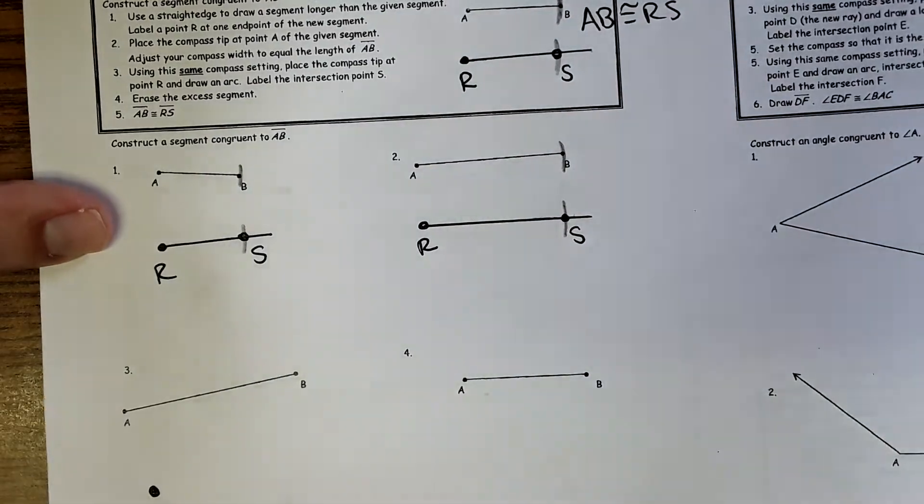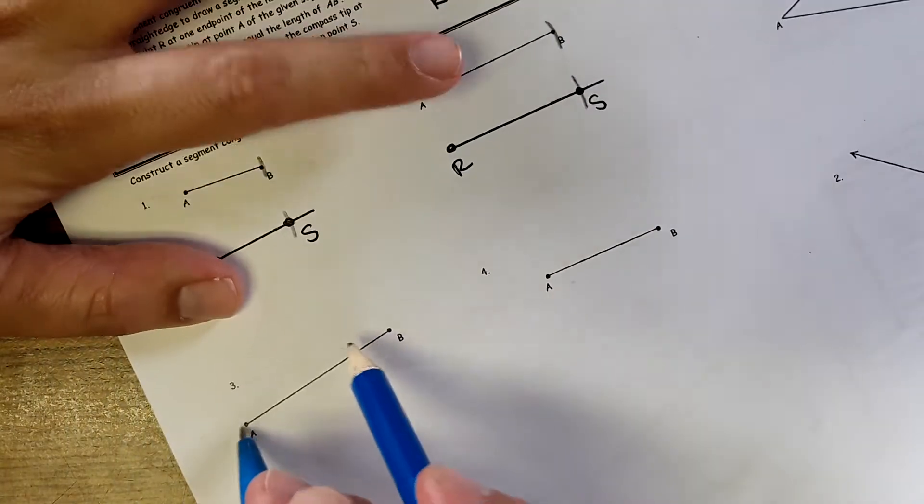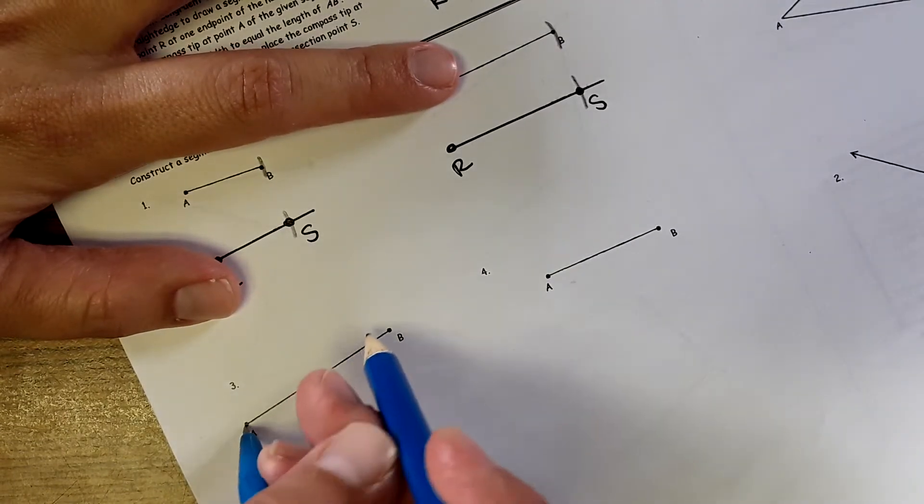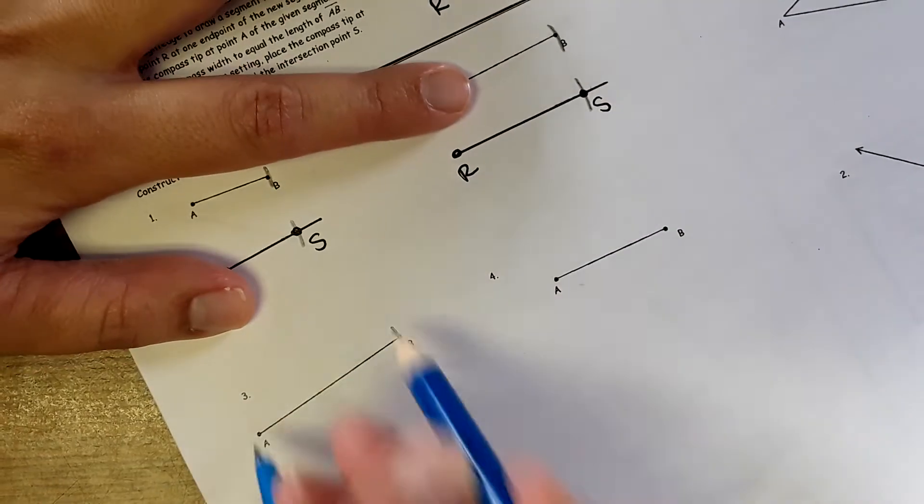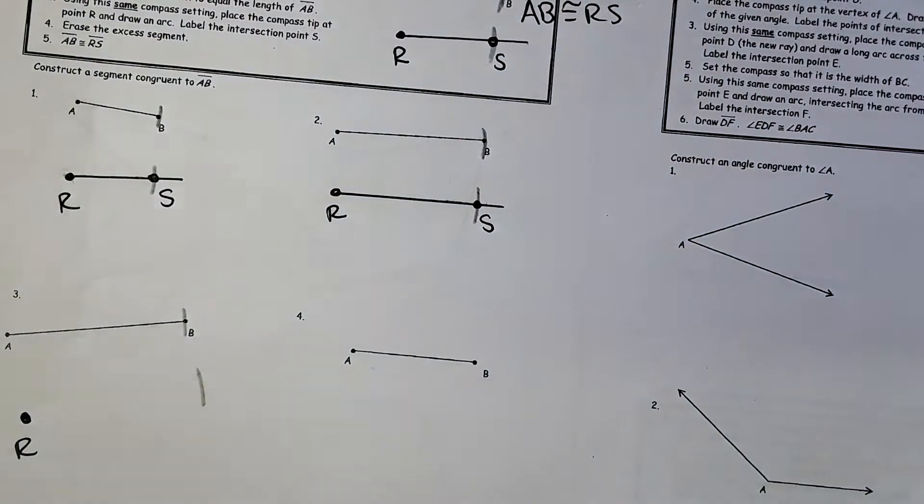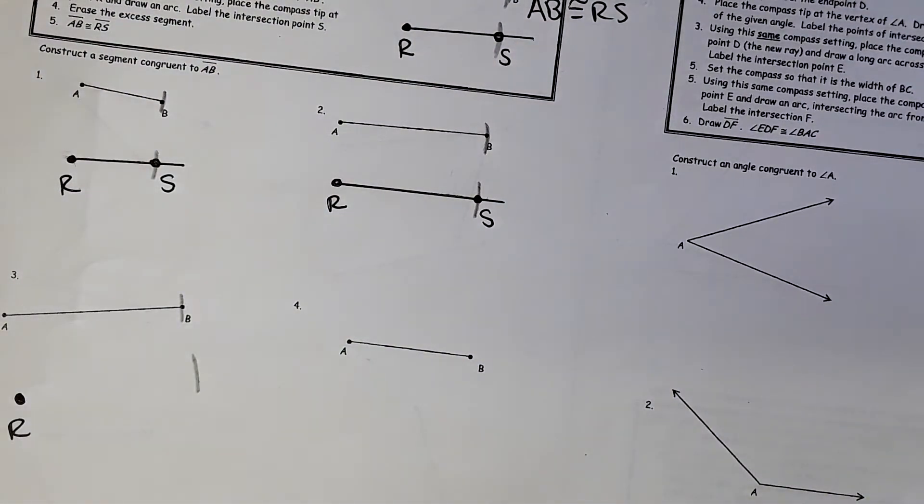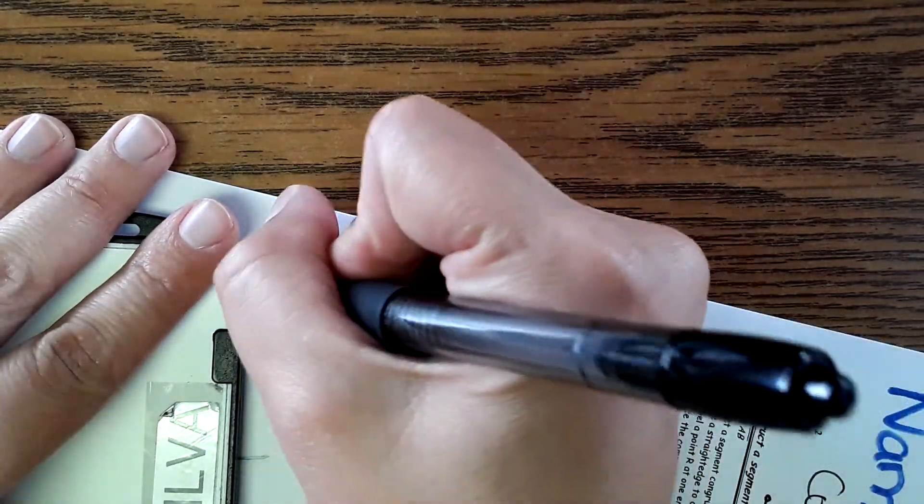Same thing, point R. Measure the distance between A and B, put this on R. And then use your ID or whatever straight edge you have. If you freehand it, it's very obvious and I will take off points. Don't freehand.